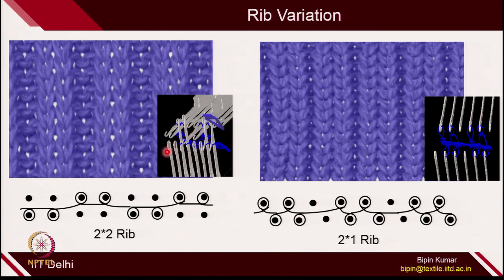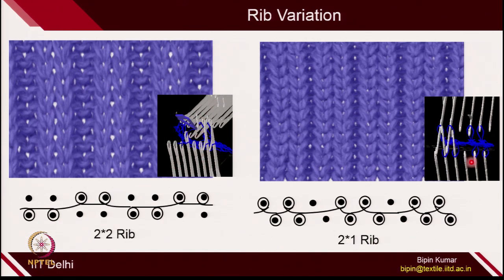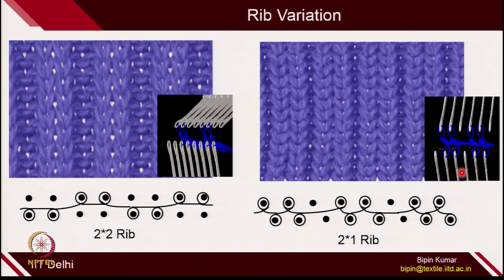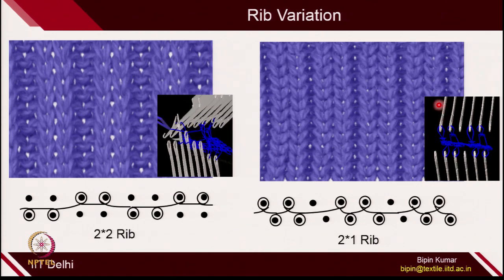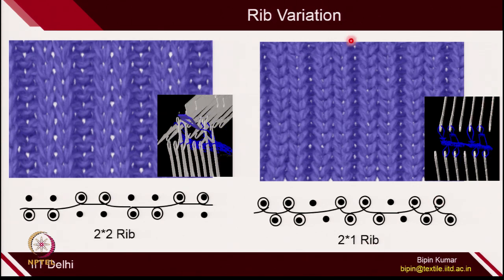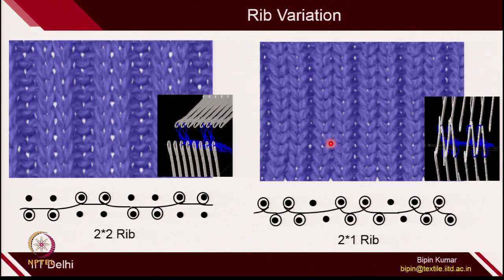If you see the animations — in 2×2 rib, 2 are acting and 2 are resting on both beds. In 2×1 rib, 2 are acting and 1 is resting. You can see here: 2 are acting, 1 is resting, 2 are acting, 1 is resting. On the back bed similarly, these 2 are acting, this one is resting. This is called 2×1 rib. From the surface it will look like 2×2, but technically this is 2×1 rib in terms of technical language.